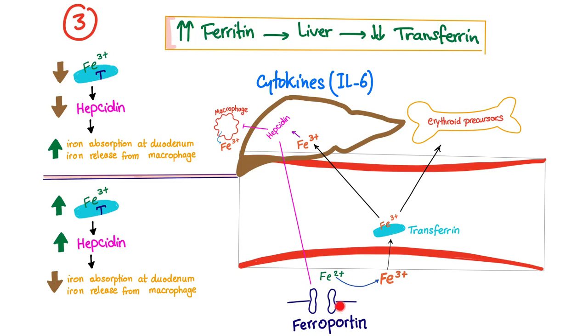Hepcidin works by two mechanisms. Block that door, so that not more iron comes. Or block the macrophage from releasing iron. So there is a theory that the cytokines, such as interleukin-6, leads this hepcidin to increase and upregulate and the liver to produce more hepcidin. So we block macrophages from releasing iron.